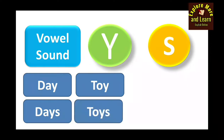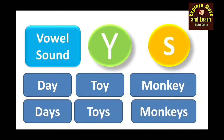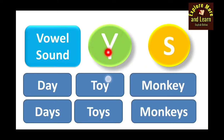'Toy' — the plural is 'toys,' because we have a vowel sound before the letter Y. 'Monkey' — here also we have a vowel sound before the letter Y, so we just add S: 'monkeys.' So when a noun ends with the letter Y and a vowel sound appears before the letter Y, we just add S after the letter Y to make the plural.